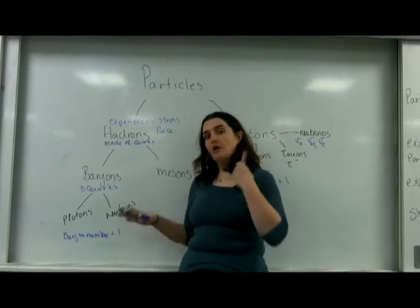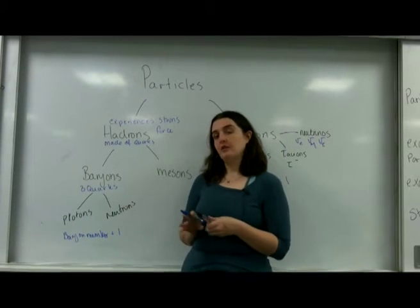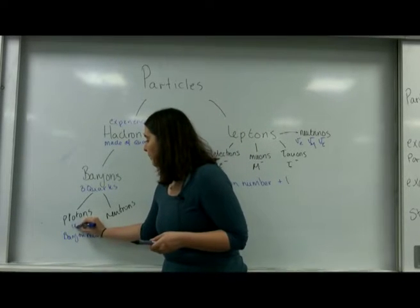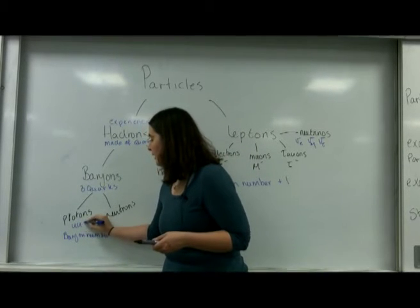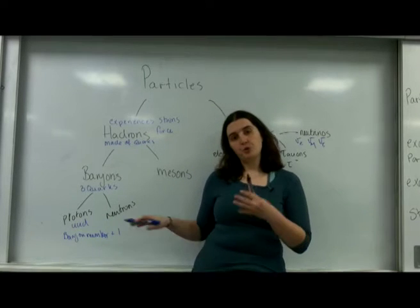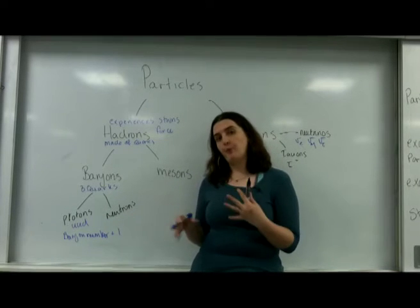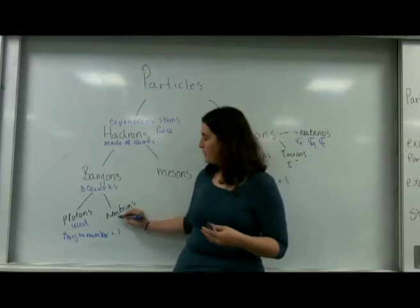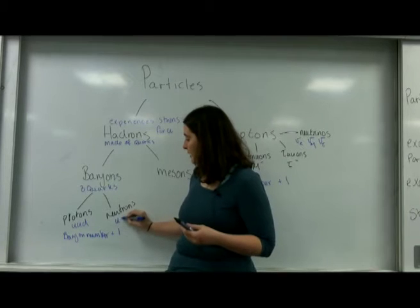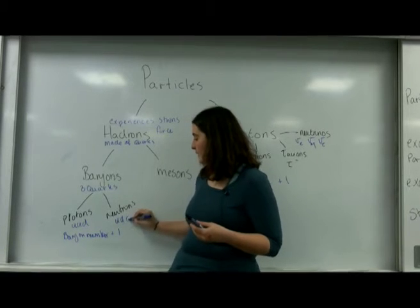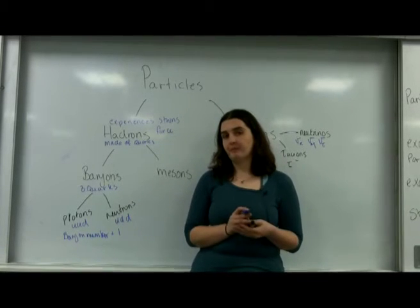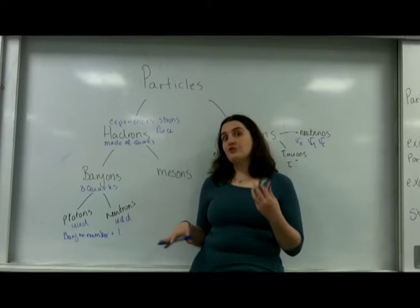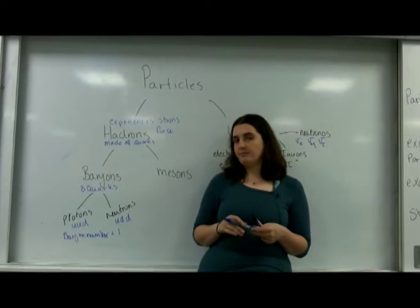The quark composition of a proton is up, up, down. And neutrons are up, down, down. These are ones you need to know off by heart.